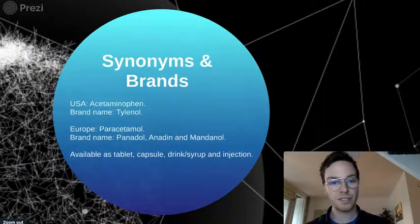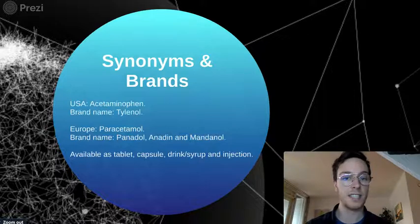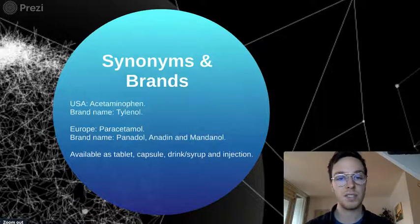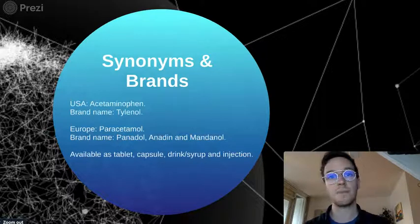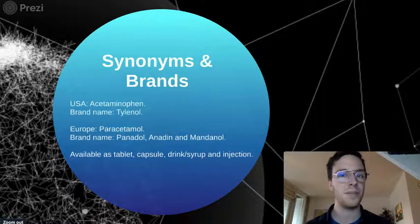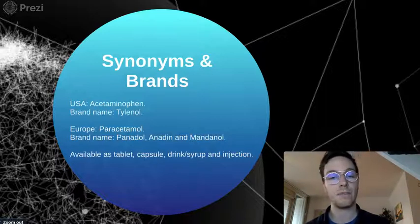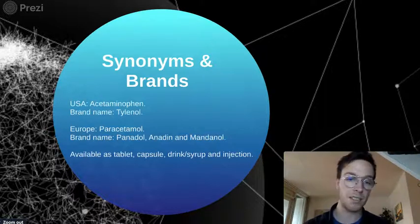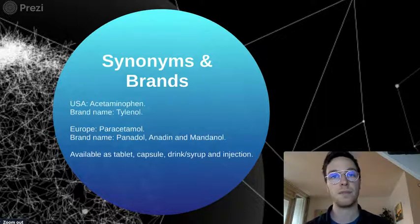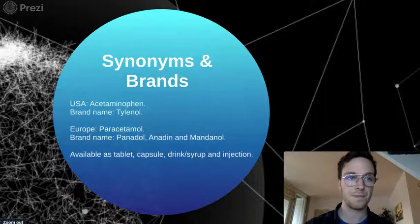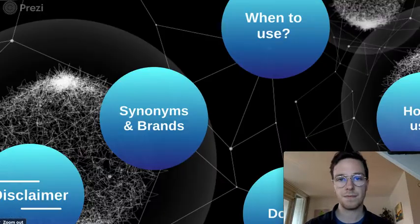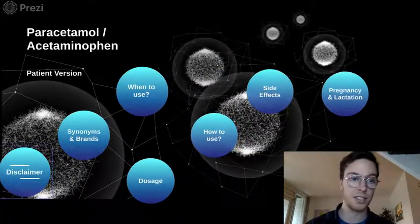In the USA, you would call it acetaminophen, with the common brand name Tylenol. In Europe, we call it paracetamol, which is exactly the same but just with a European name. Common brands are Panadol, Anadine, or Mandanol. Paracetamol is available in tablets, capsules, drinks or syrup, and injections, though injections are almost never used.